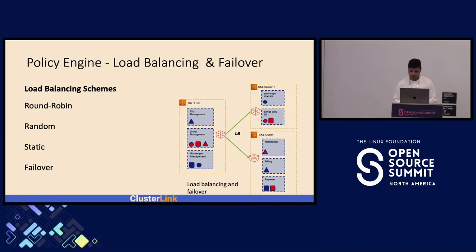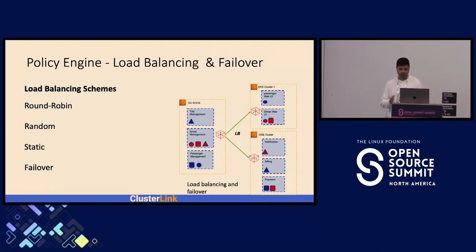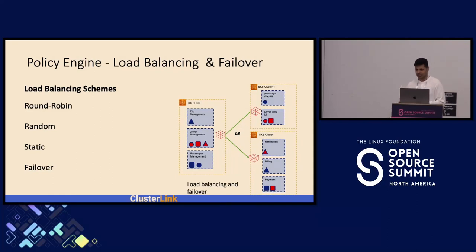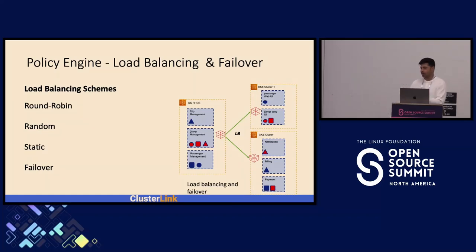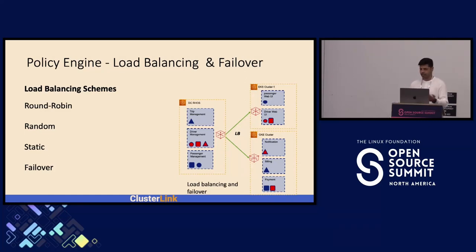ClusterLink also supports load balancing and failover, where multiple replicas of a service can be distributed across different clusters for load balancing. The schemes supported are round-robin, random selection, and static selection based on service and workload attributes. Since ClusterLink monitors the health of peered gateways, when one service is unavailable it automatically fails over to the remaining available services for a given exported service.